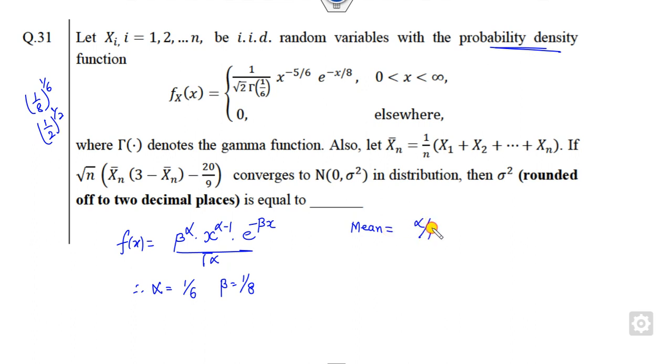It is alpha upon beta. What is the variance of the gamma distribution? It is alpha upon beta squared. So this is 1 by 6 upon 1 by 8, that is nothing but 4 by 3. The variance is 1 by 6 and 1 by 64, so it is 32 upon 3.